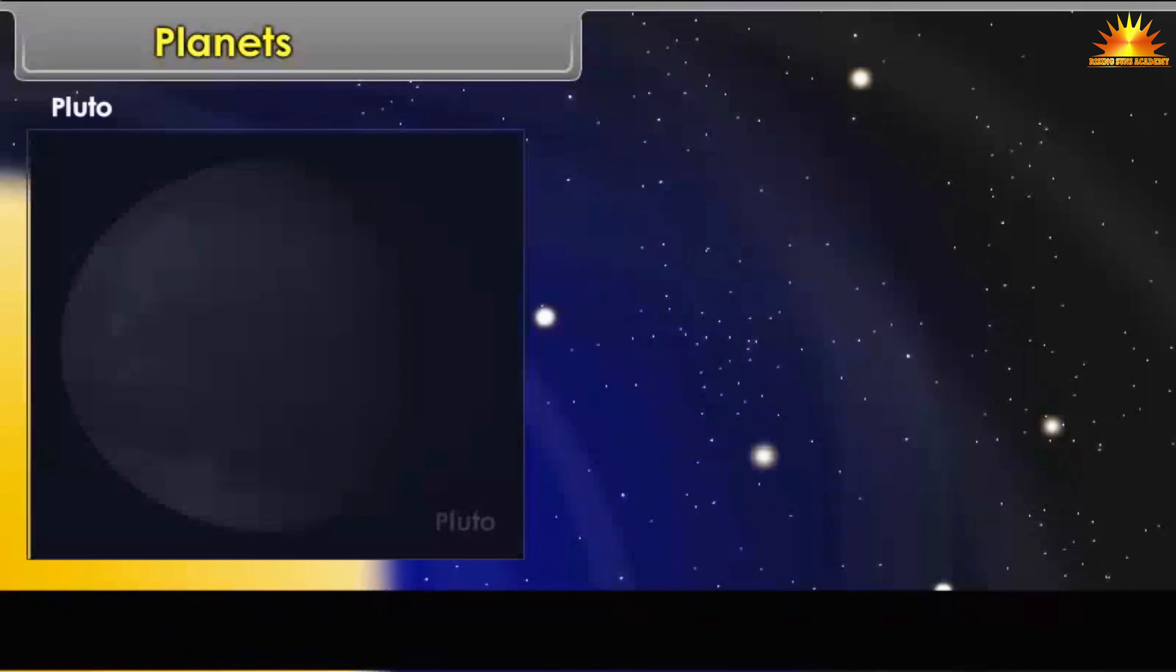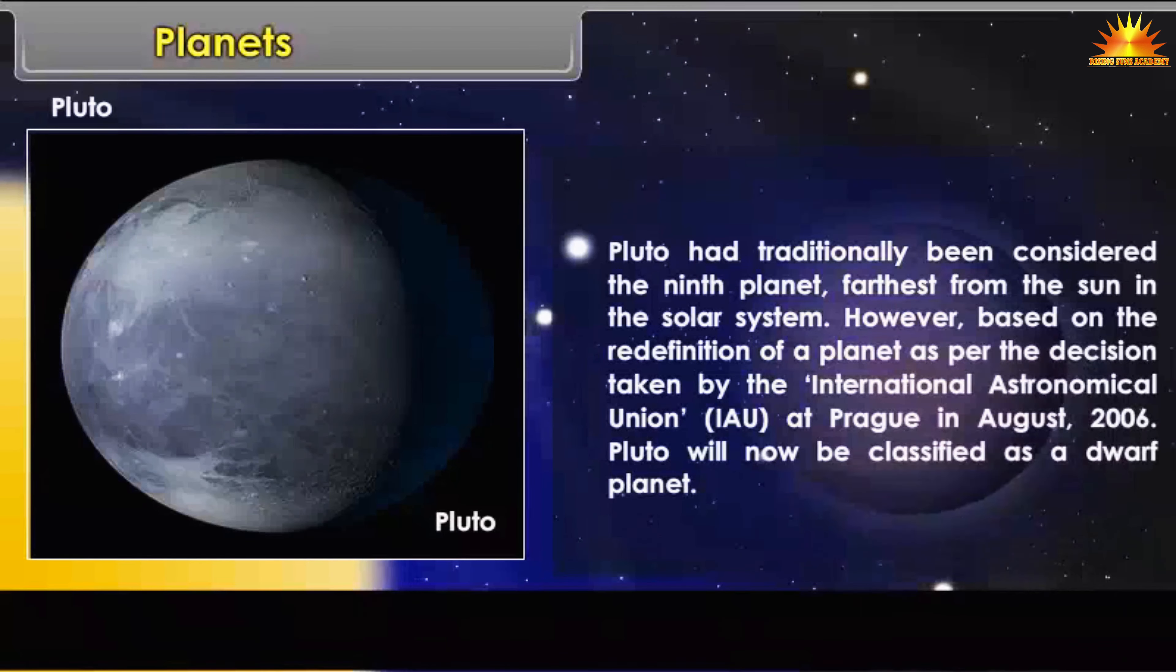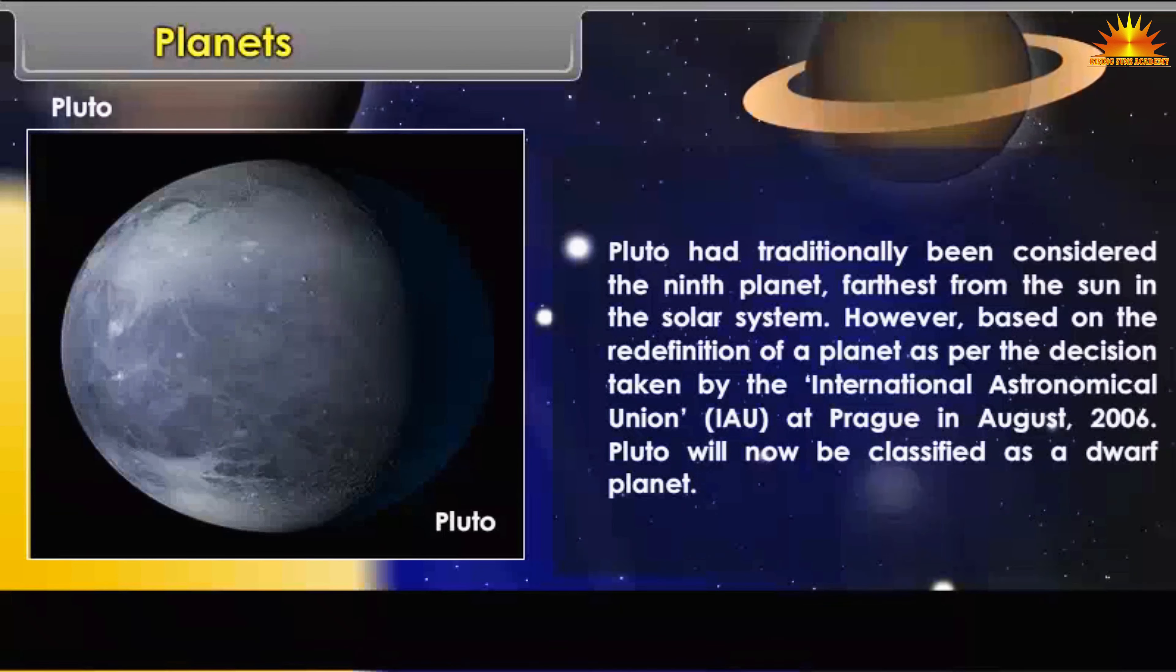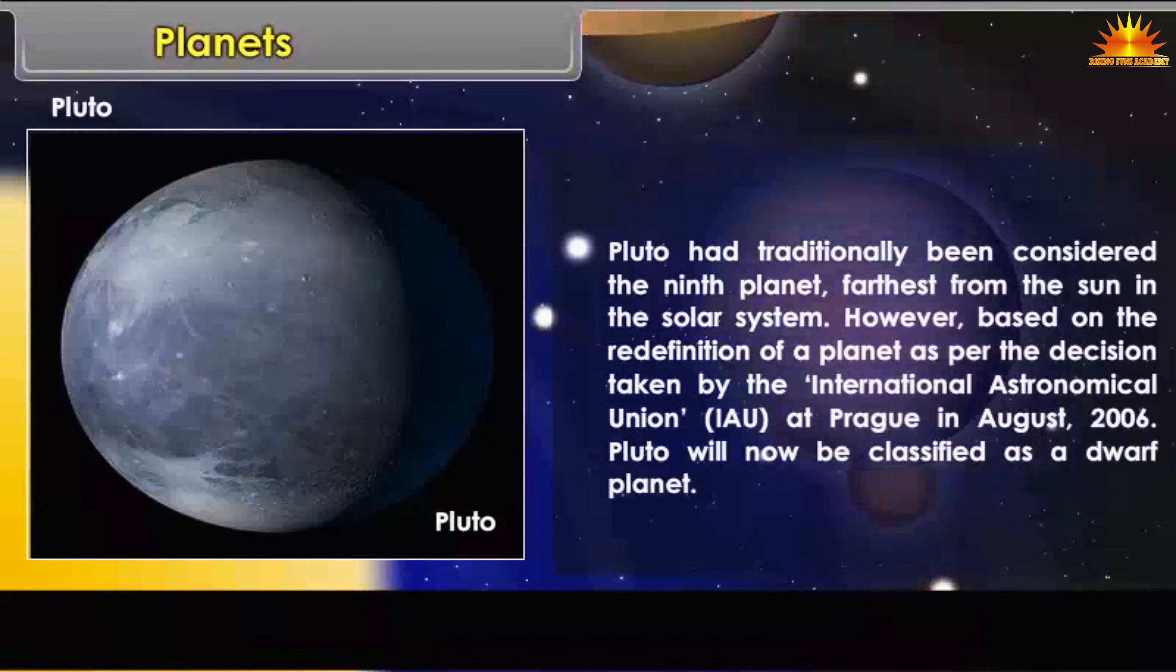Pluto: Pluto had traditionally been considered the ninth planet, farthest from the Sun in the solar system. However, based on the redefinition of a planet, as per the decision taken by the International Astronomical Union (IAU) at Prague in August 2006, Pluto will now be classified as a dwarf planet.